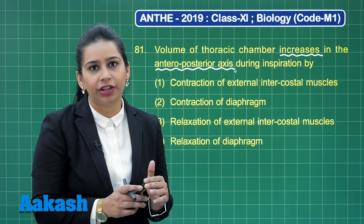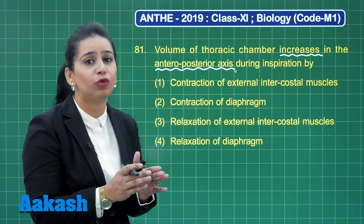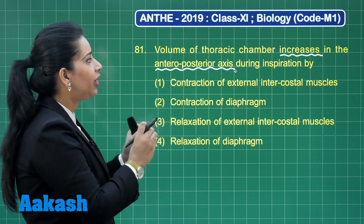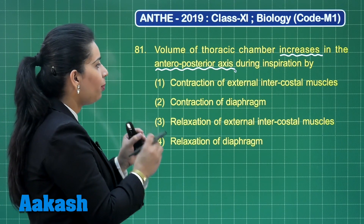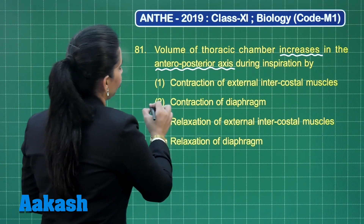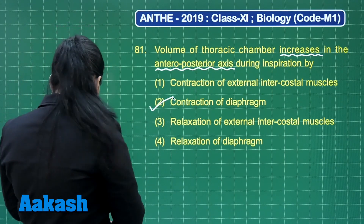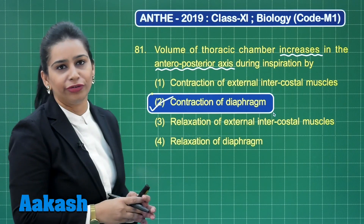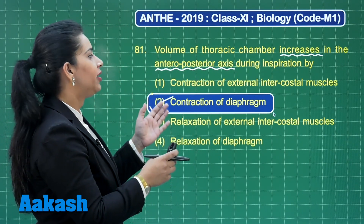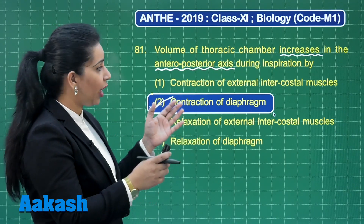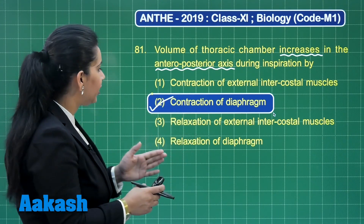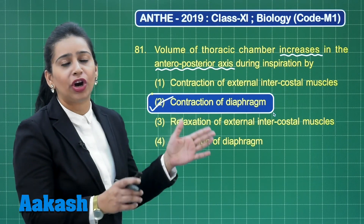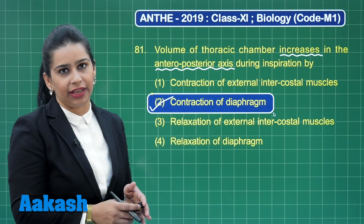During exhalation, the exact opposite occurs: relaxation of the diaphragm decreases volume at the antero-posterior axis, while relaxation of the external intercostal muscles decreases volume at the dorso-ventral axis. So the increase in volume in the antero-posterior axis is done by contraction of the diaphragm — that is option number 2. Options 3 and 4 involve relaxation and are ruled out as they decrease thoracic volume.